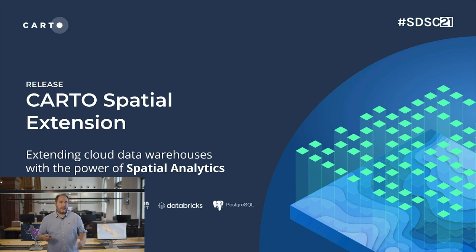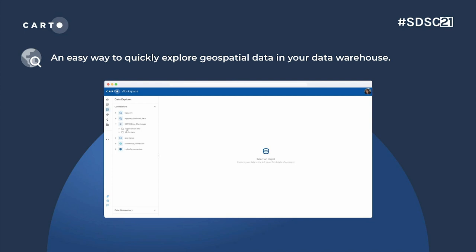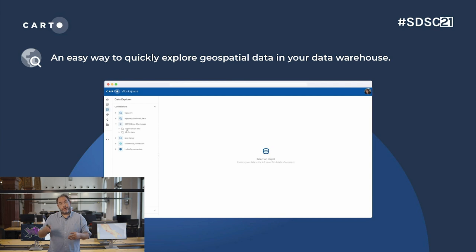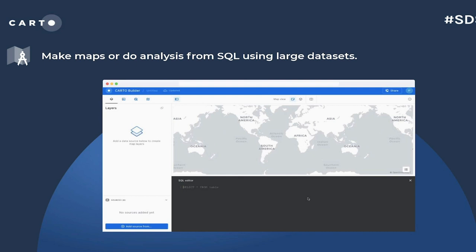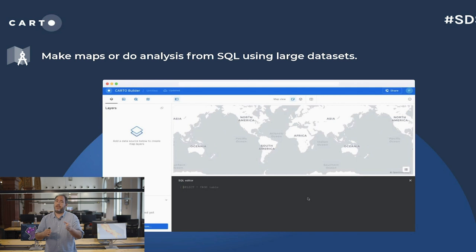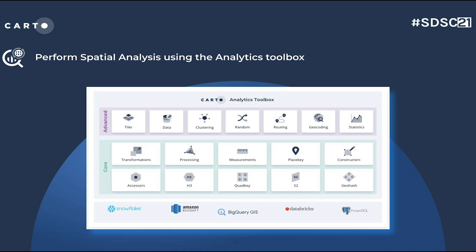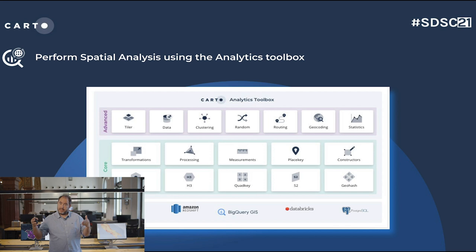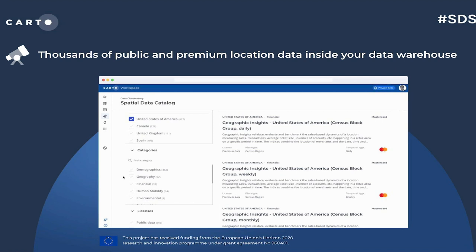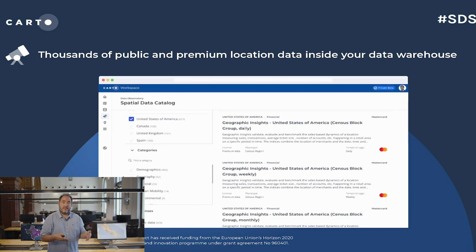Let me show you what we built on top of these systems. First, an easy way to explore geospatial data in your data warehouse: connect your data warehouse and quickly explore your tables and tilesets to get maps showing the type of data you already have. Next, make beautiful maps directly with SQL — write SQL and get maps in 2D, 3D, in full vector that you can share with others. Under the hood, the Analytics Toolbox augments and extends your system so that you can do much more spatial analytics.